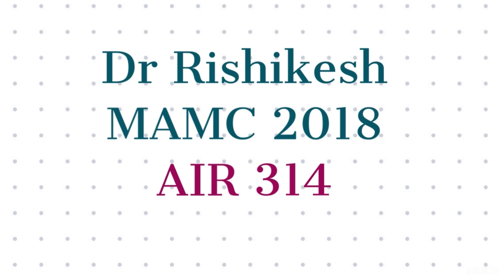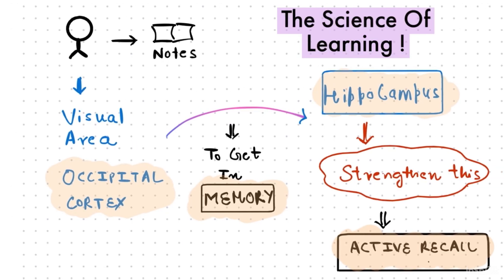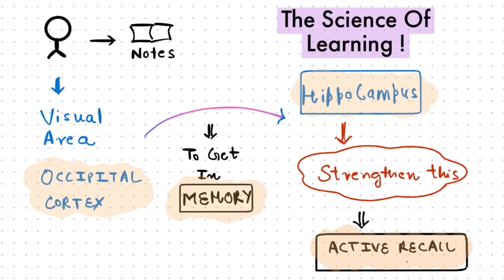So friends, first of all we will see what is active recall and I will try to explain this by taking an example. Consider this is any medico and he is reading some notes. Some of his brain areas seem to be highly active. The occipital cortex creates images of what he sees and the data is sent to the hippocampus to store as memory.